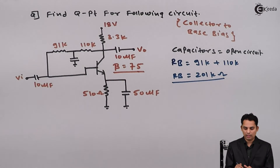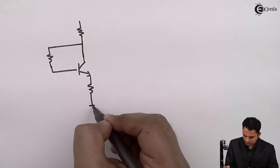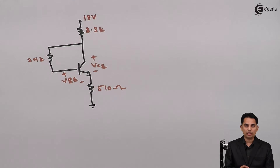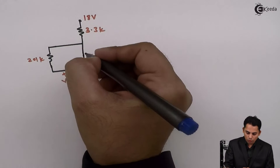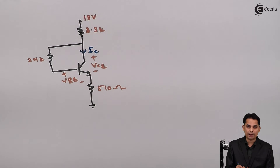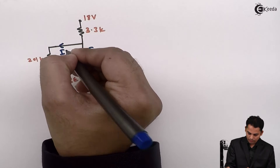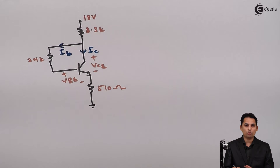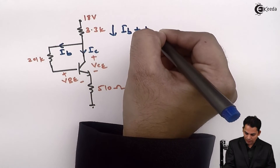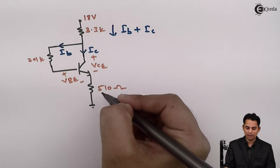This is the value of RB we have got. We will open the capacitors and redraw the circuit. The next step is to mark current directions. Current flowing from the collector is IC. Current flowing from the base is IB. Hence, the current flowing through 3.3 kilo ohms is IB plus IC. Similarly, current flowing from the emitter is IE.